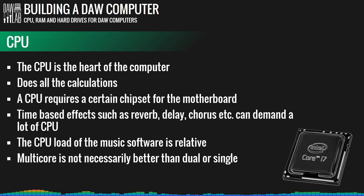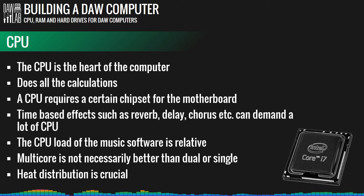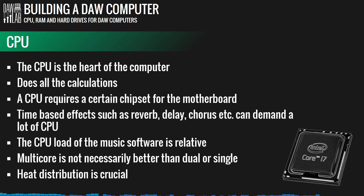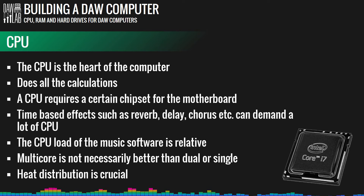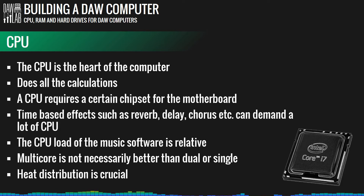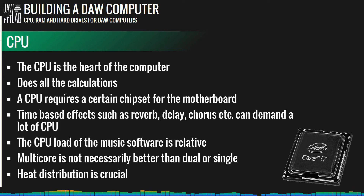That said, I would still go for a multi-core CPU. Multiple cores allow heat to spread out more evenly across the chip, giving the CPU a lower average temperature, and lower temperatures increase performance in theory. Also, most up-to-date CPUs already have multiple cores, and multi-core is likely the standard going forward.